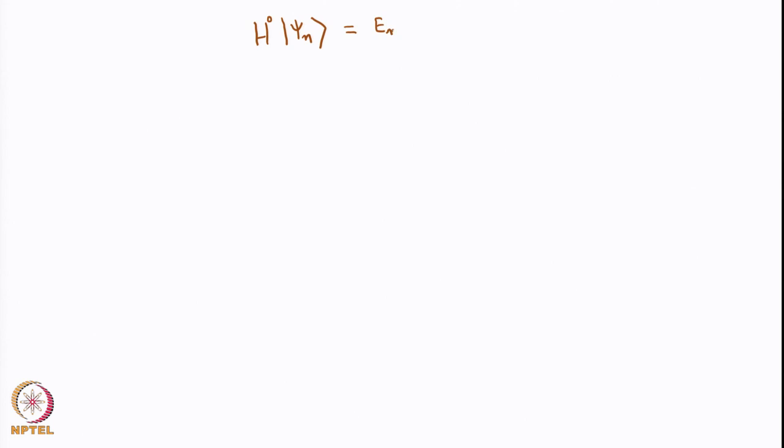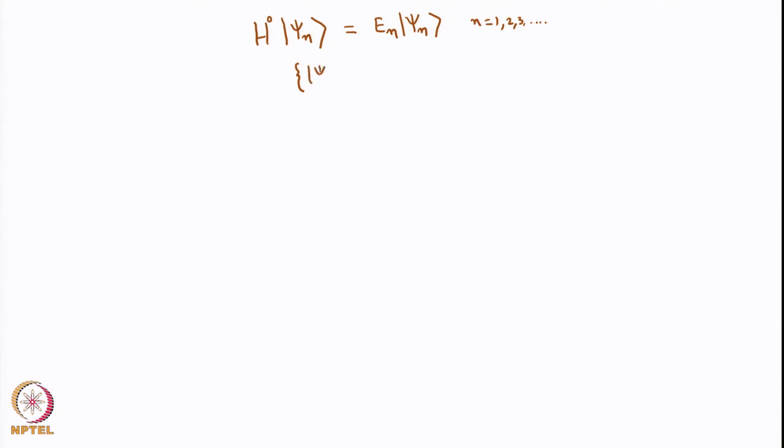In the previous lecture, we started with the time-dependent perturbation theory of many states. We had a time-independent Hamiltonian H0, with solutions H psi_n = E_n psi_n, where n = 1, 2, 3, etc. It is like a particle in a box, for which we already know the solutions. In such a scenario, the functions psi_n form a complete set.